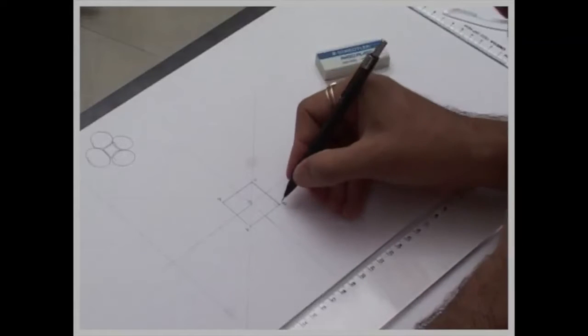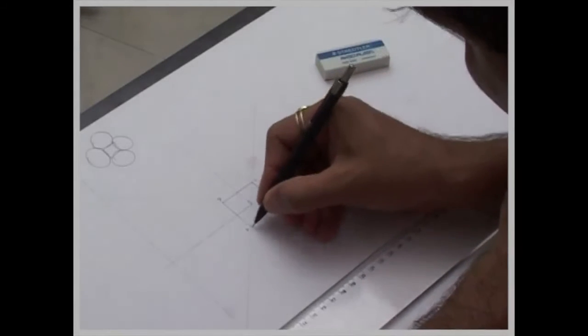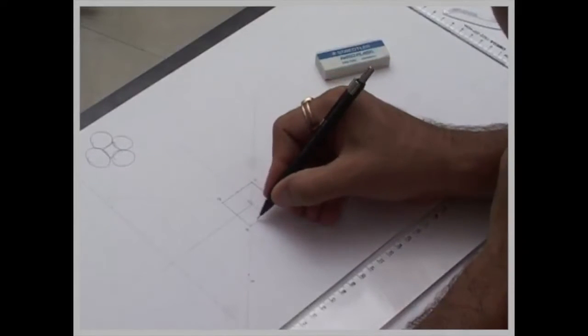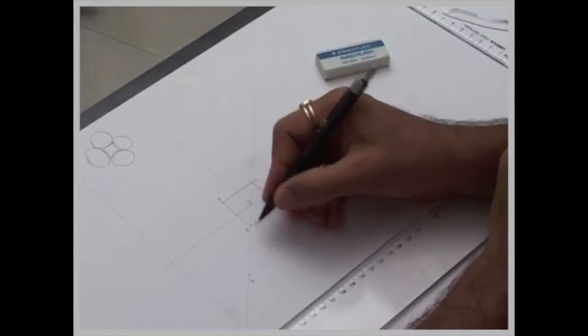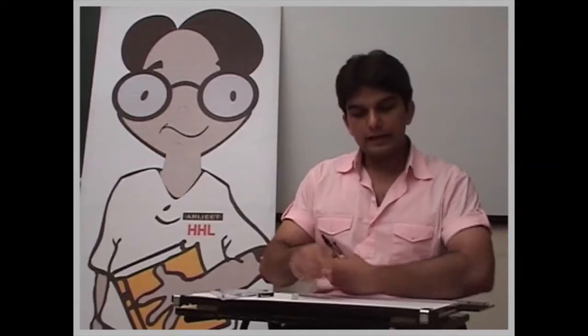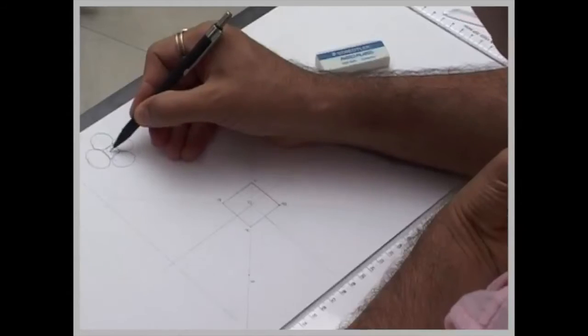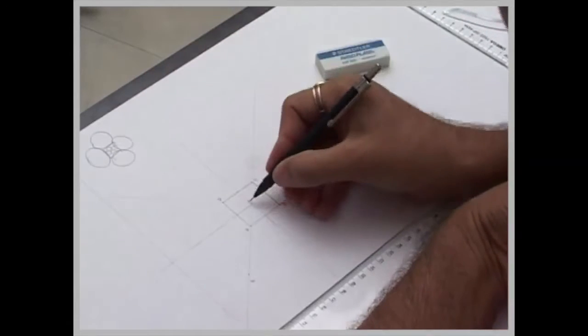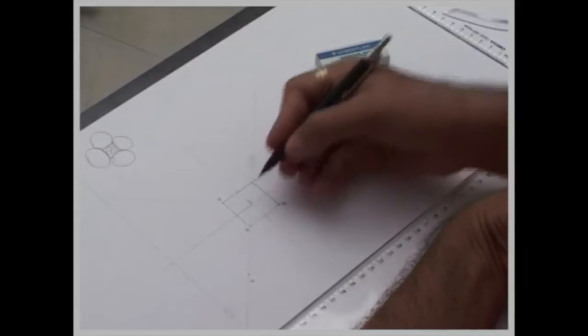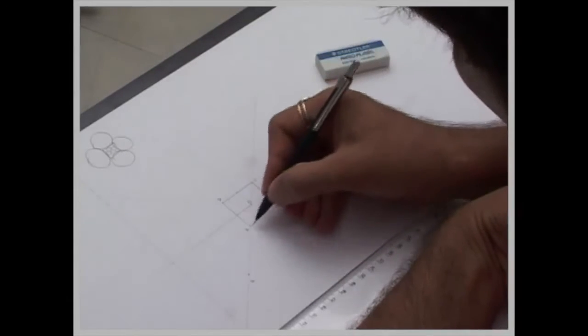Now in this case what we are going to do, we are going to bisect angle BAE. So instead of bisecting inside angle, now we are going to bisect outside angle. All of you have understood the difference. Like in earlier case when we used to draw incircle, that time we used to bisect angle OAB. Now we are going to bisect angle BAE.